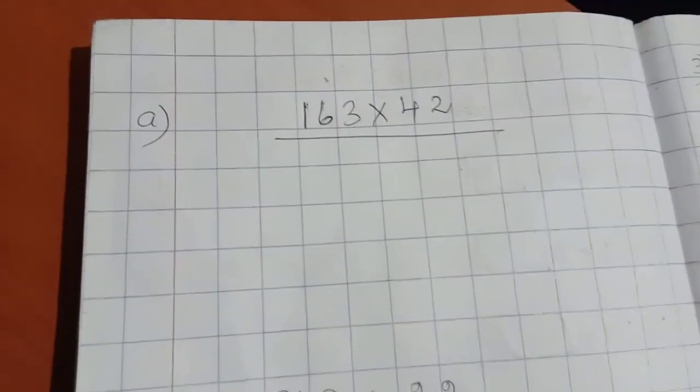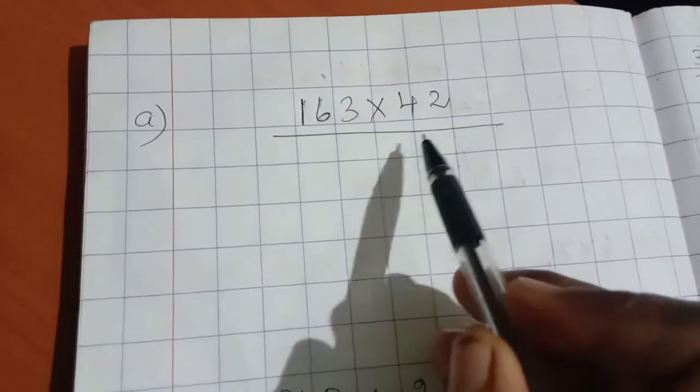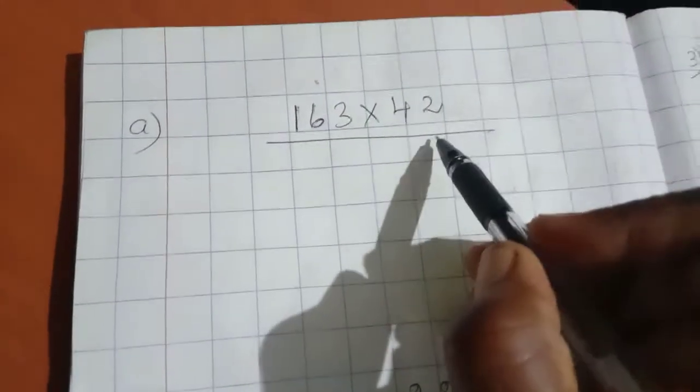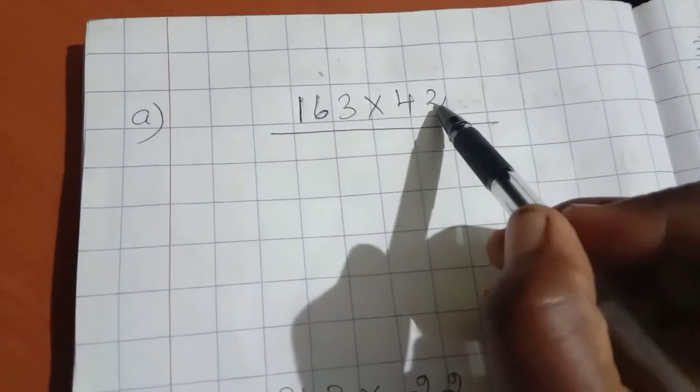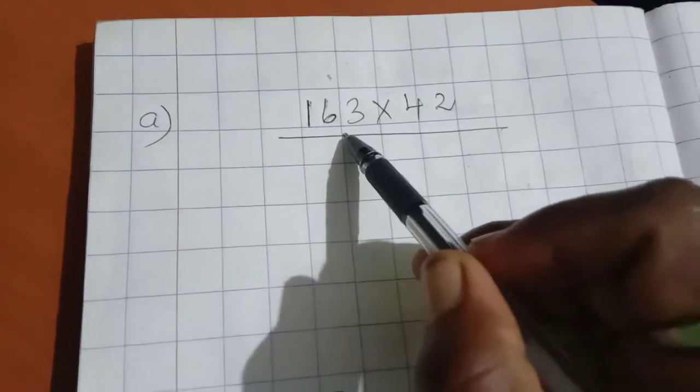Welcome back to Kids Learning Express. Today we are going to see double digit multiplication. First we will do one's place multiplication. Next we will do ten's place multiplication.